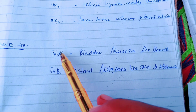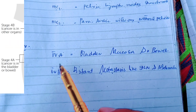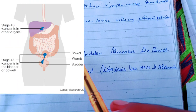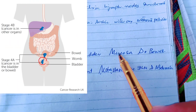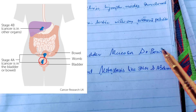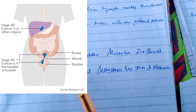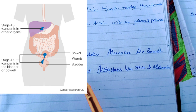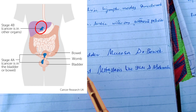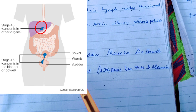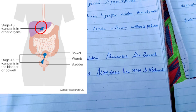Stage 4 is further divided into Stage 4a and Stage 4b. Stage 4a involves the bladder mucosa or the bowel mucosa. Stage 4b is when the endometrial carcinoma spreads to distant sites such as the abdomen and the inguinal lymph nodes.